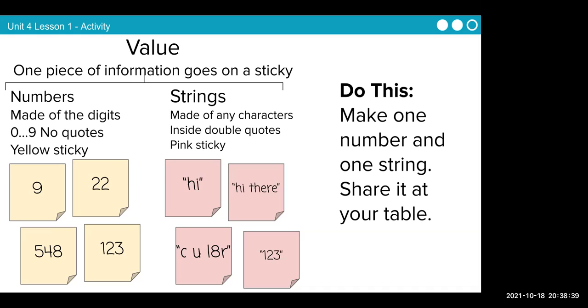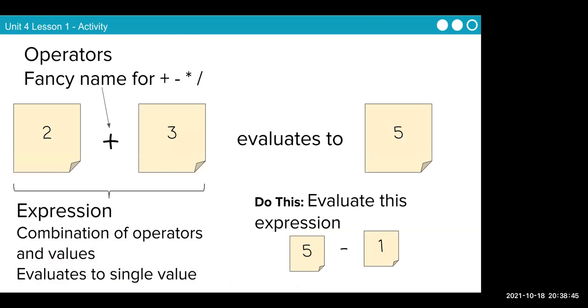How is that? What did you pick for your number and your string? Operators are fancy names for plus, minus, times, and divided. Those are mathematical operators. So we're saying two plus three, plus is the operator, evaluates to five. That is an expression. Two plus three, combination of operators and values, evaluates to a single value. So two plus three evaluates to five.